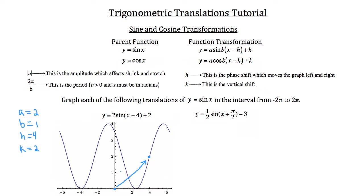A typical sine function goes 1 unit up and 1 unit down, but the amplitude of our translated sine function is 2. So we go 2 units up from the new origin, peaking there, and 2 units down, troughing there. That's how the blue sine function behaves. We've calculated where our new origin is and what the maximum and minimum values are based on the amplitude. Now let's look at the period: it's 2π/b.